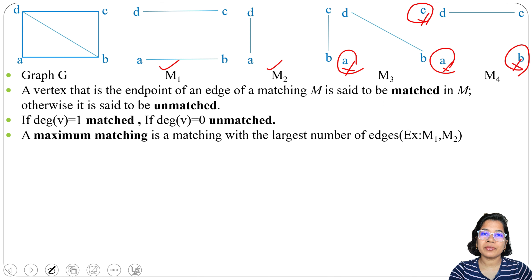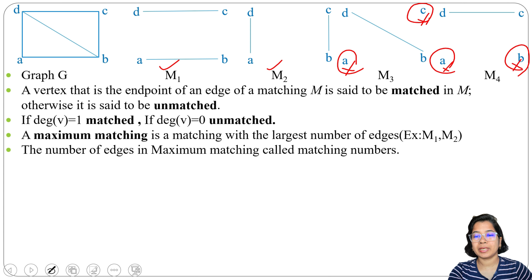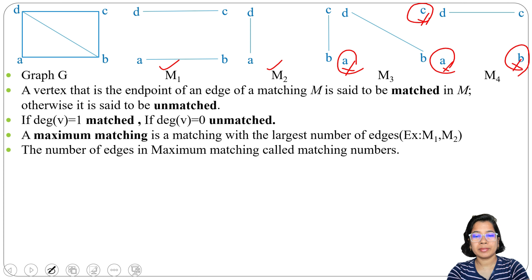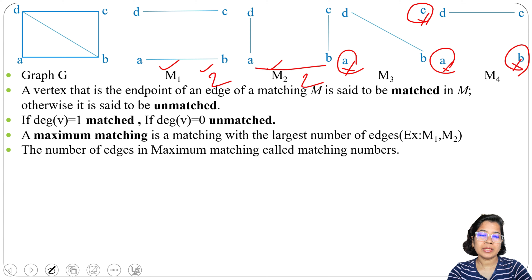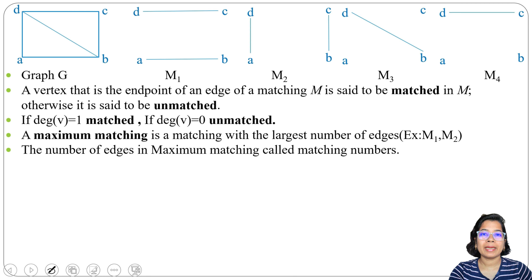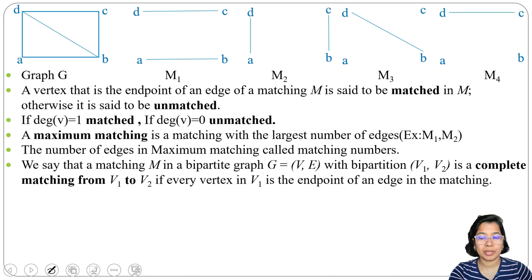A maximum matching is a matching with the largest number of edges. Here M1 and M2 have maximum edges, so they are maximum matchings. The number of edges in a maximum matching is called the matching number. Here the matching number is 2.